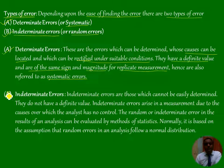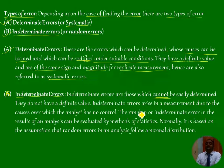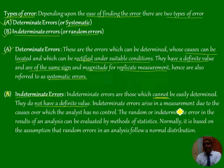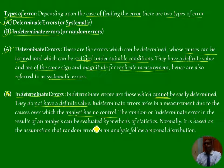The second type is indeterminate errors. Indeterminate errors are those which cannot be easily determined — you are not able to determine them. They do not have a definite value. Indeterminate errors arise in measurement due to causes over which the analyst has no control.